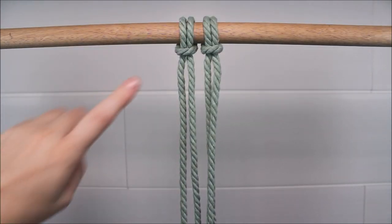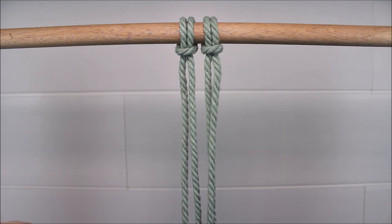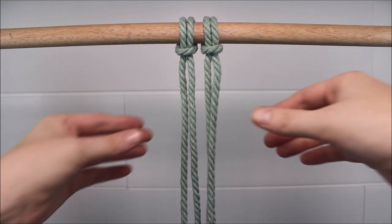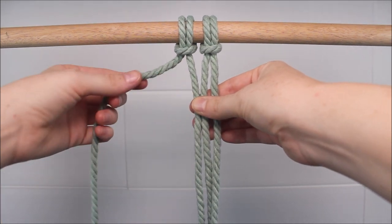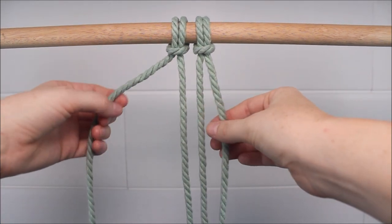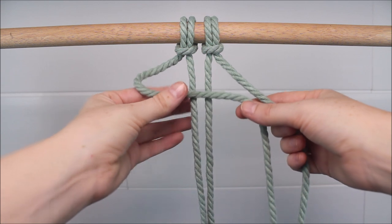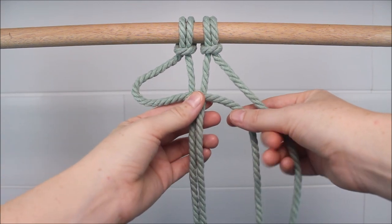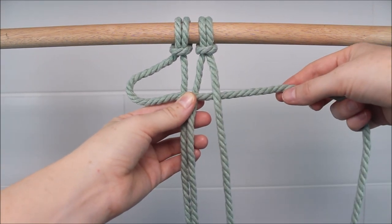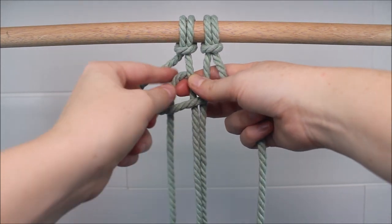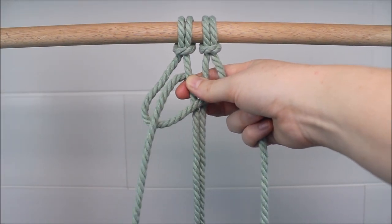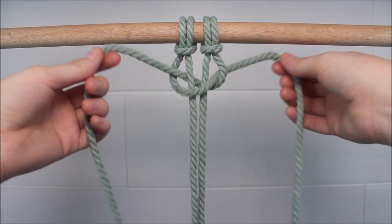You can also start your square knots on the left side, which is called left-facing square knots. So all you do in this case is your first square knot starts on the left side. So you take that left cord to cross over your two cords in the middle to form a loop. Then the side on the right goes over the left, behind the two in the middle, and up through the loop. Pull on those to tighten.